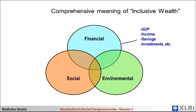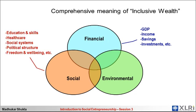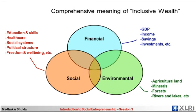The social wealth of a society or community includes things like educational level, skill level, how the healthcare system functions, how robust the social systems are, how inclusive the political structure is, and well-being. The environmental wealth includes things like fertile agricultural land, minerals, forests, rivers, and lakes.